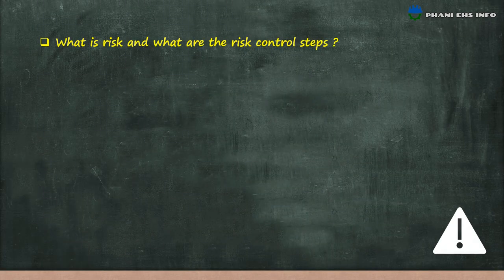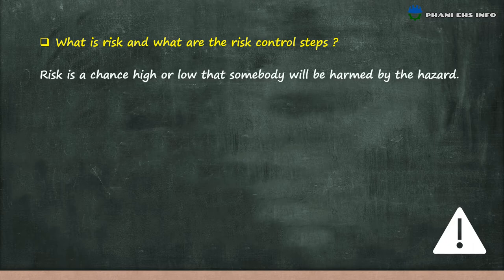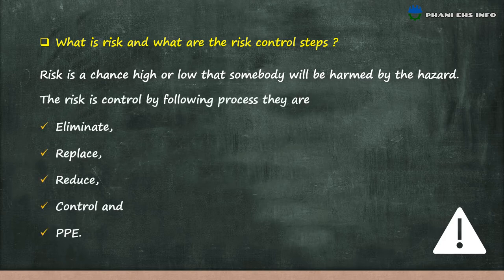What is risk and what are the risk control steps? Risk is a chance, high or low, that somebody will be harmed by the hazard. The risk is controlled by the following processes: eliminate, replace, reduce, control, and personal protective equipment.